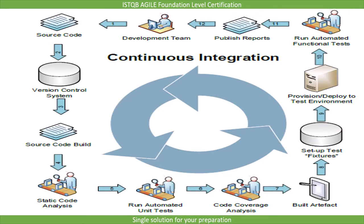This picture shows the complete workflow of a continuous integration process. Once the source code is developed and available, we do version controlling of it — that means we provide a unique ID to it so that it is easily identifiable. Then we start the build process where we complete the compiling and linking process and executable files are generated. Then we perform static code analysis on it.